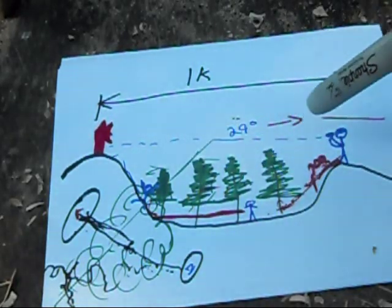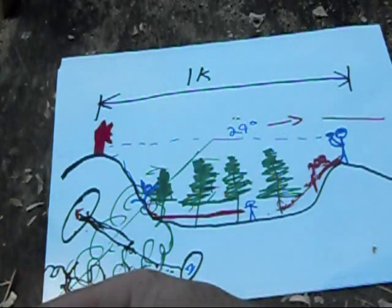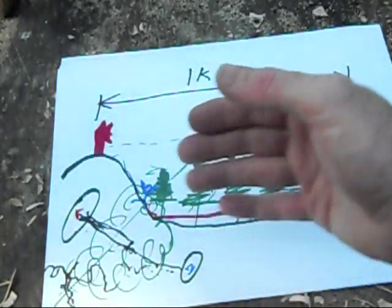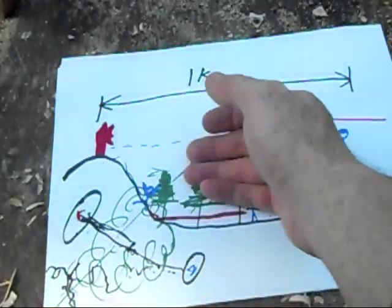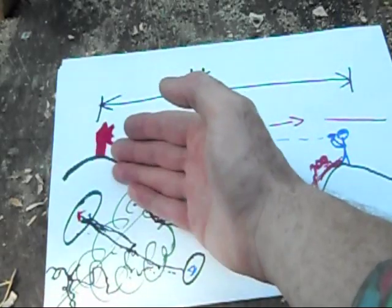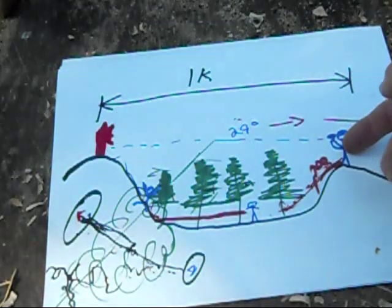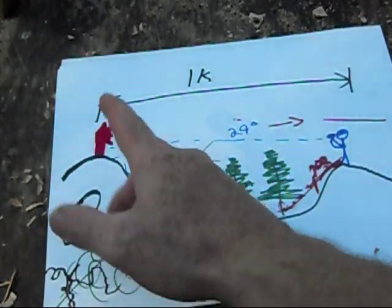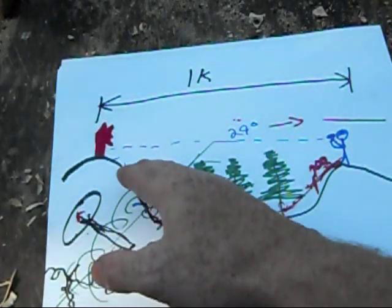So that's the importance of shooting an azimuth regardless of the situation you're in, regardless of visibility. And we went over the two methods of how to do that, which is the compass to cheek, which is more accurate because the more accurate you are for this distance, the more likely you haven't differentiated.